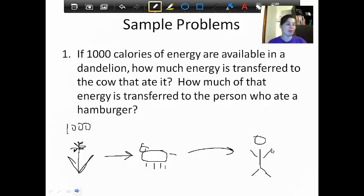If we start with 1000 calories at the producer level, according to our energy pyramid, only 10% of the energy is going to get passed on to the primary consumer, which is our cow. So we need to figure out what is 10% of 1000. So that means we take 1000 times 0.10, that's 10%, which equals 100 calories. That's our energy. It's measured in calories. So that cow, out of the original energy the dandelion has, only gets 100 calories of energy.